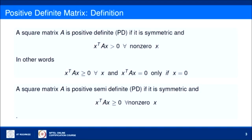Whatever non-zero vector you take, x transpose A x should come out to be positive. If this is true then we say the square matrix A is a positive definite matrix — in short, PD, P for positive and D for definite. The same definition can also be written as: x transpose A x is greater than or equal to 0 for all x, and this expression equals 0 only if x equals 0.